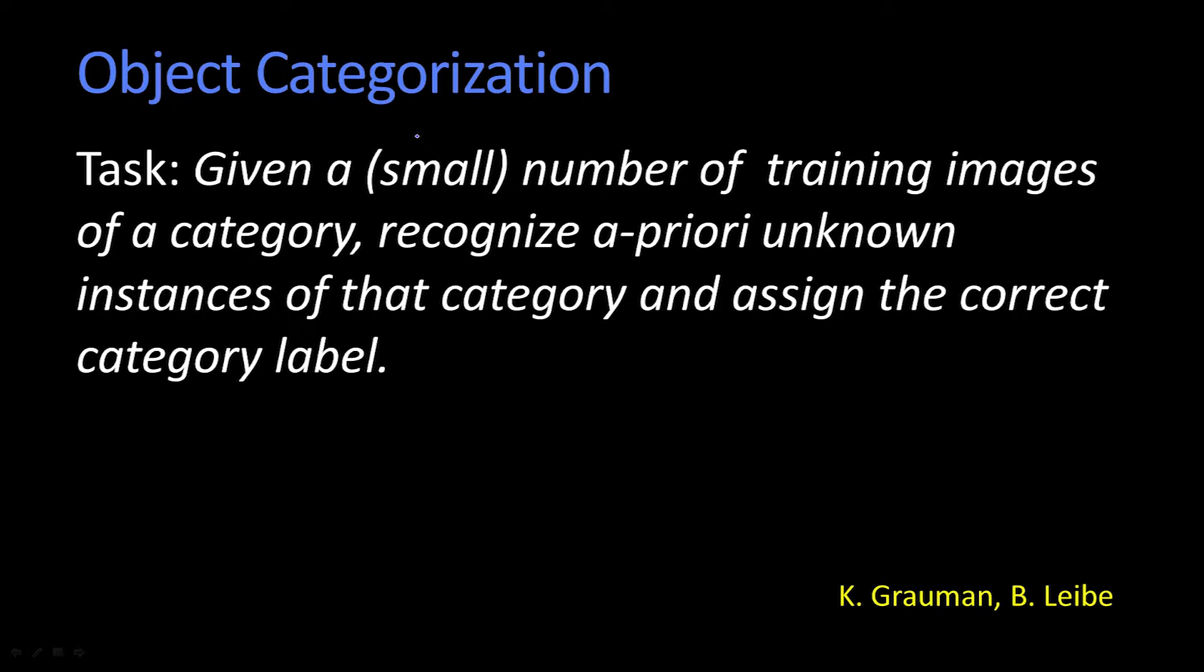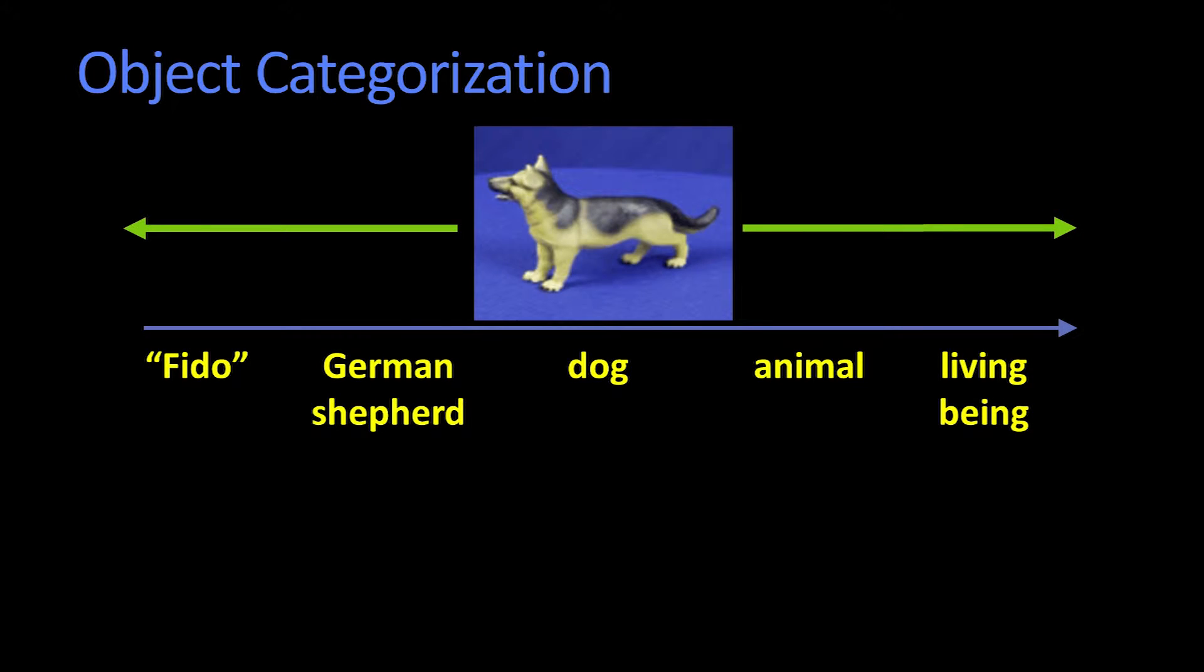So one of the things we have to do before we can even proceed is we have to agree on a set of labels. And there's this fundamental problem that a single object doesn't have a unique label. So here we have somebody's dog apparently named Fido. I don't know if anybody names their dogs Fido anymore.